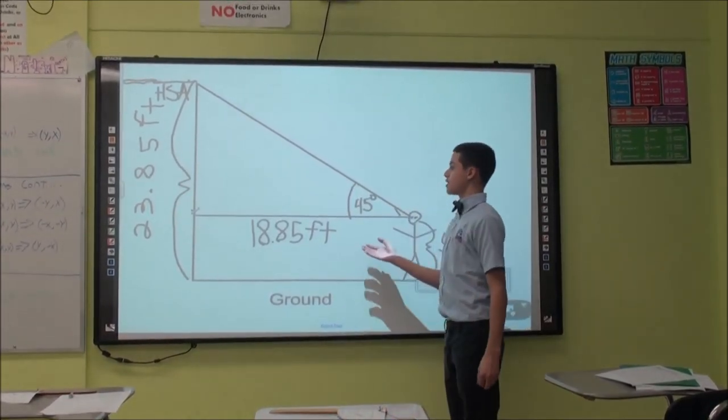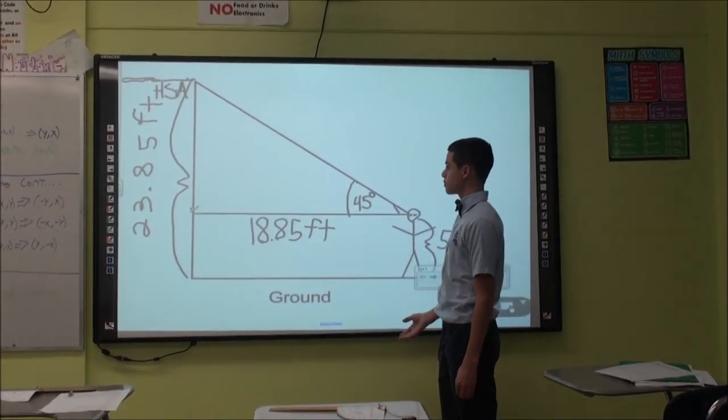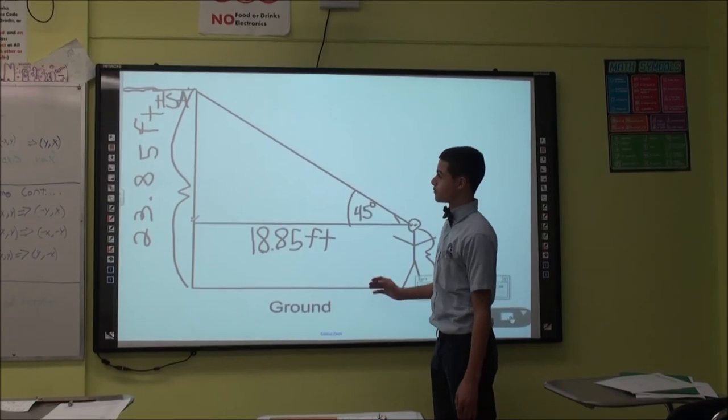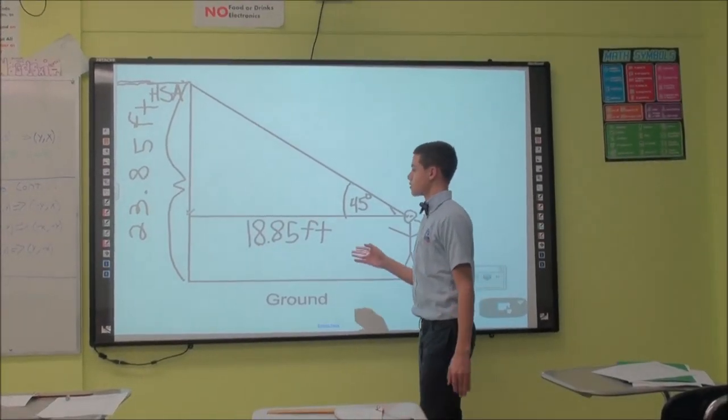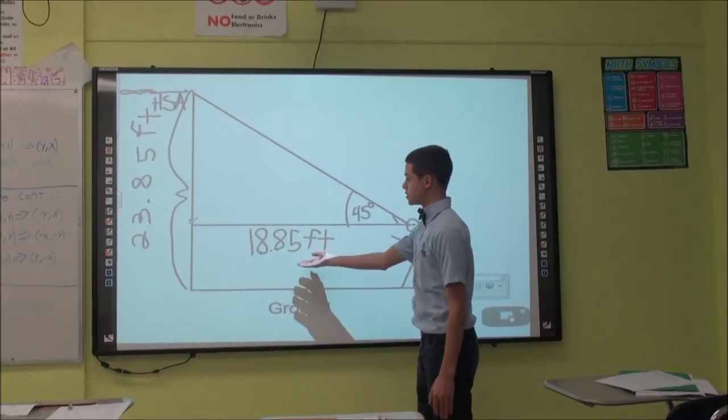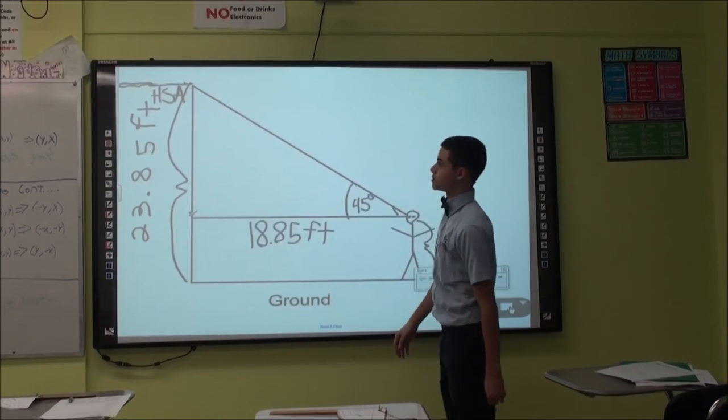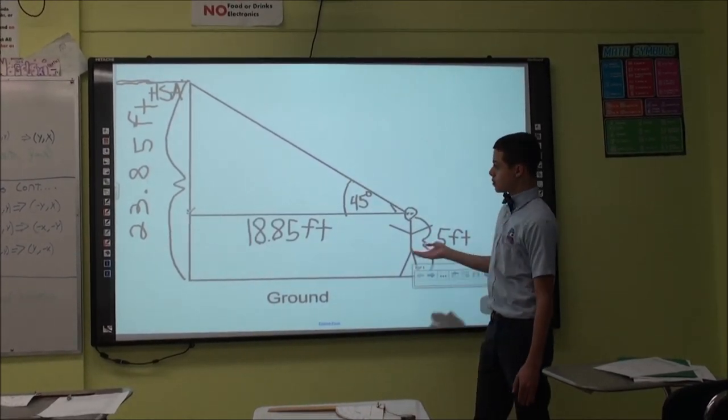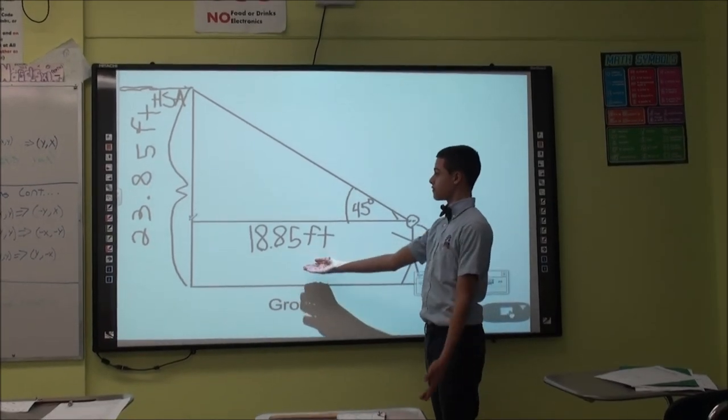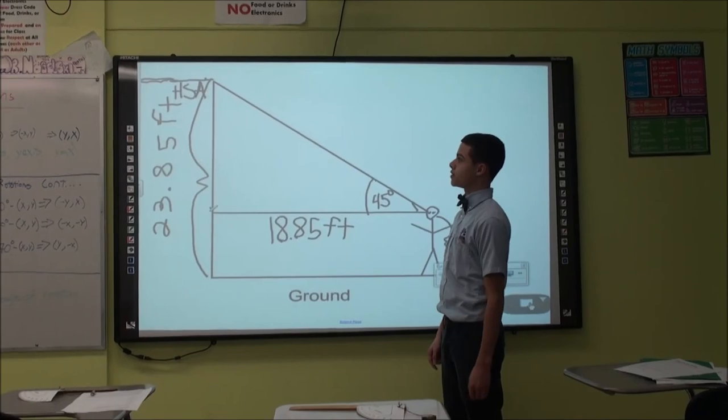Then I got an average of 18.85 feet, and in a 45-45-90 degree triangle, the legs are congruent, so this length would be equal to this length. So, to find the total height, I added my height, 5 feet, plus 18.85 feet, for a total of 23.85 feet.